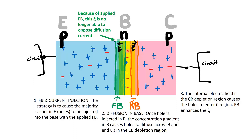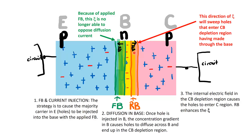The reverse bias enhances the collector-base electric field. Looking back at the emitter-base junction, the applied forward bias means the internal electric field can no longer oppose the diffusion current, allowing injection. For the collector-base junction, the electric field direction sweeps holes that enter the collector-base depletion region — holes will move in the positive direction of the field and are swept into the collector.